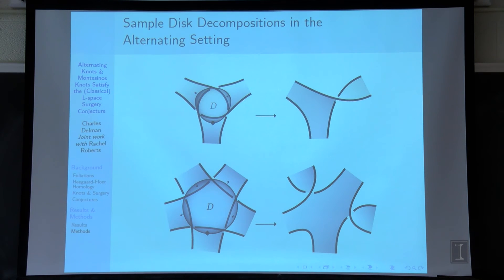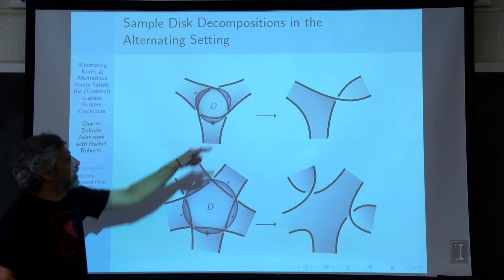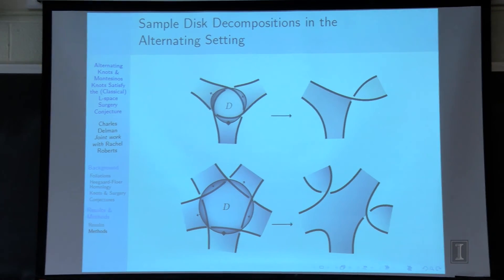For alternating knots, since crossings alternate, when you put in a decomposing surface it hits every crossing, so you get twists where the arrows are, ending up with a sutured manifold that looks like the complement of a simpler surface. You just keep reducing the genus, and we can show you can reduce it to zero and get a taut sutured manifold for any knot. And that's what I have to say. Thank you.